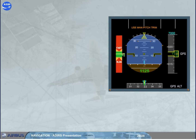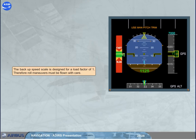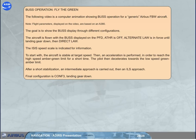The aircraft's angle of attack speed must remain in the green area. For each configuration, a green bug indicates the target speed, which is the optimum speed that the flight crew must maintain, especially during approach and landing. The target speed is automatically set by the system. The aircraft's current speed is indicated by a fixed yellow horizontal bar with a yellow triangle. The backup speed scale is designed for a load factor of 1; therefore, raw maneuvers must be flown with care. The following video is a computer animation showing bus operation for a generic Airbus fly-by-wire aircraft.